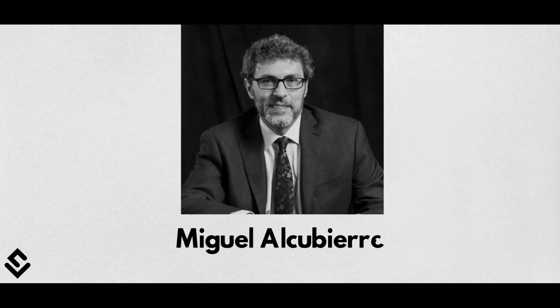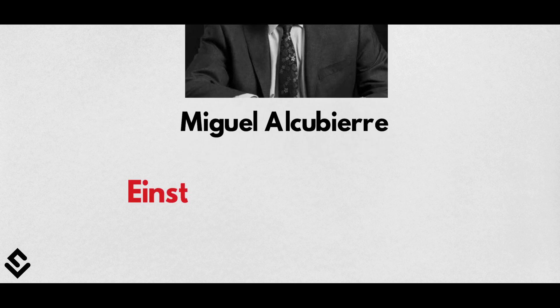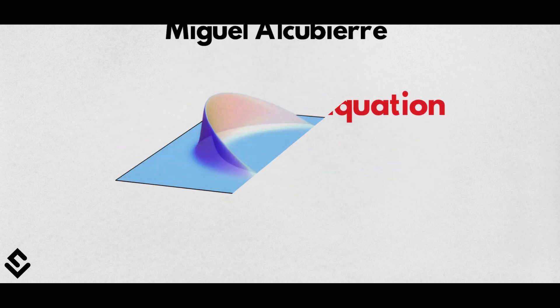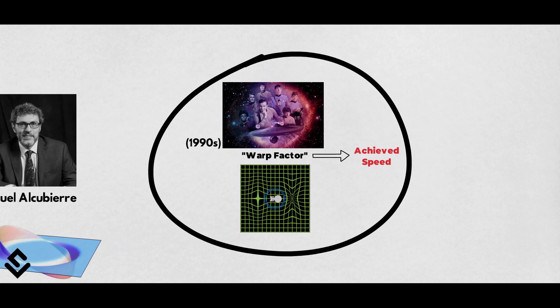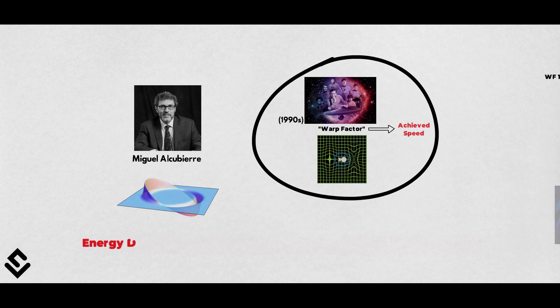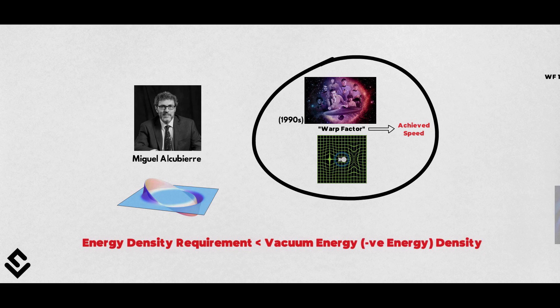But in 1994, a Mexican physicist Miguel Alcubierre suggested a new solution of Einstein's field equation and proposed a new method of faster-than-light travel that uses a similar approach like Star Trek. He proposed that faster-than-light travel is possible only if the energy density requirement around the spaceship is lower than that of vacuum energy, that is the negative energy density.